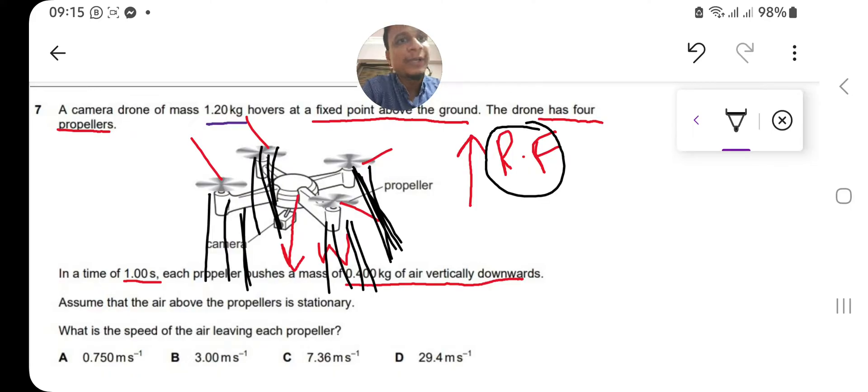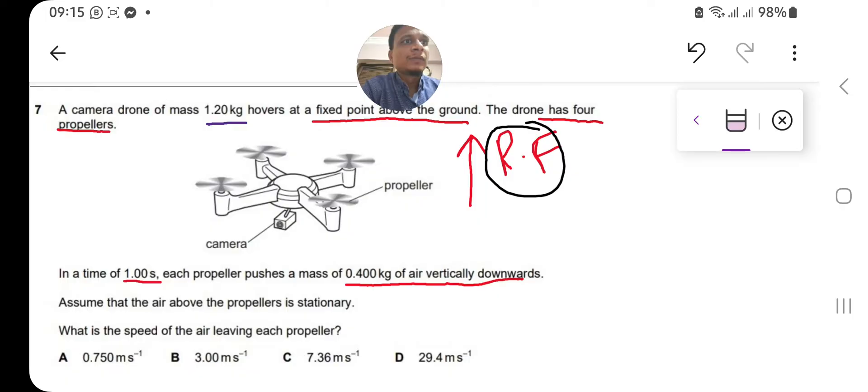It also says assume that the air above the propeller is stationary. We need to find the speed of the air leaving each propeller. When the drone is not switched on, the air is stationary and not moving. But as soon as the drone propellers switch on, the air will start leaving from the propeller downward.